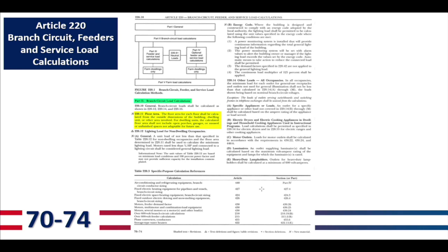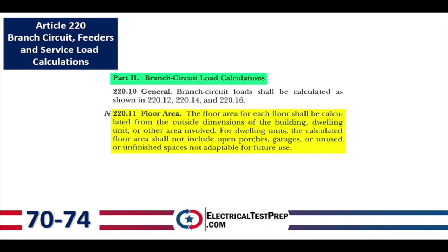Section 220.11, Floor Area. The floor area for each floor shall be calculated from the outside dimensions of the building, dwelling unit, or other area involved. For dwelling units, the calculated floor area shall not include open porches, garages, or unused or unfinished spaces not adaptable for future use.